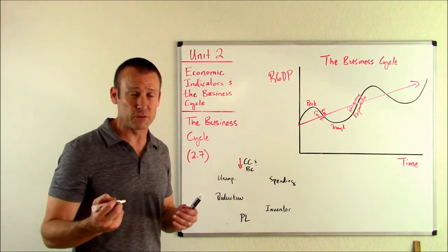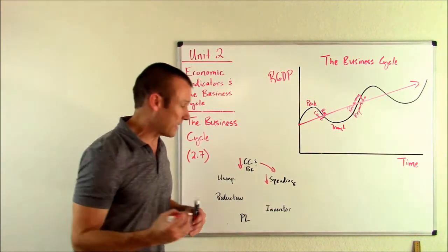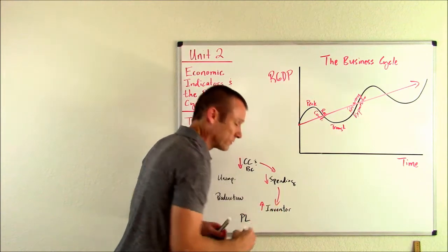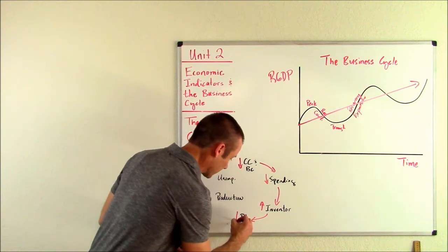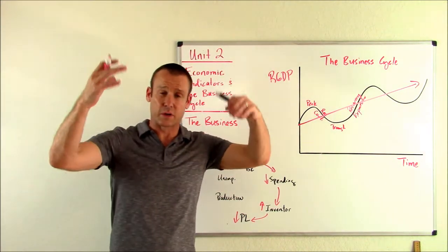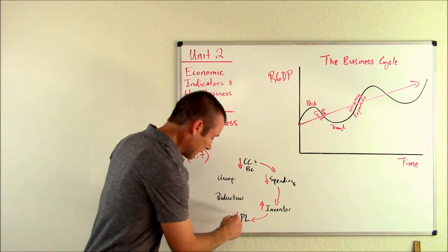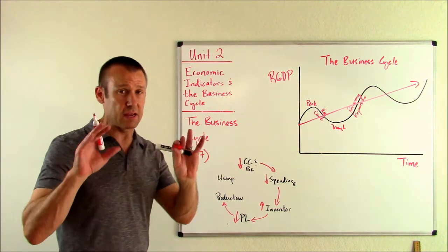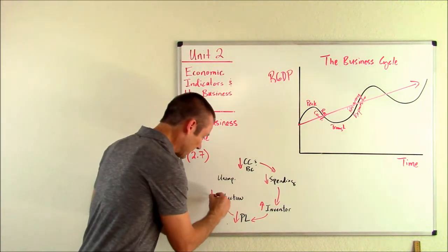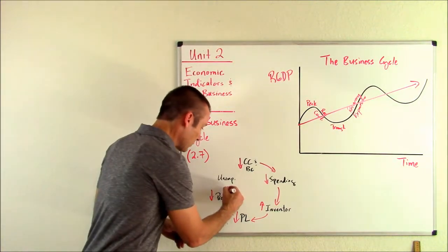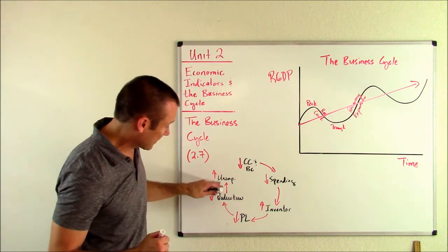Well, when business and consumer confidence goes down, they get fearful. What are they going to do? They're going to spend less. And when they spend less, inventories are going to start to go up. And when inventories start to go up, the first thing that's going to happen is the price level is going to go down. Of course, when businesses see their inventories going up, businesses will start to mark things down or put them on sale. But then eventually, they're going to call the manufacturer and say, hey, I need to cut my order for next time. And if that happens enough, you start seeing production going down. And if that continues to happen, you will see layoffs start to happen. Unemployment going up.